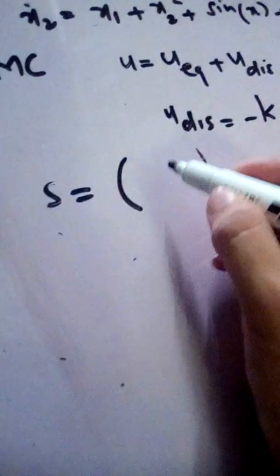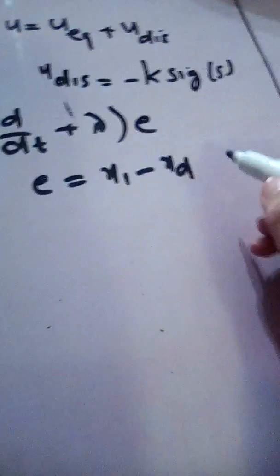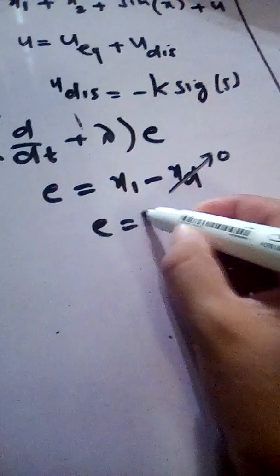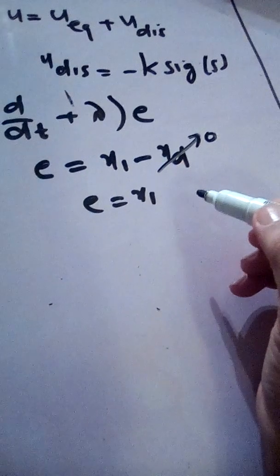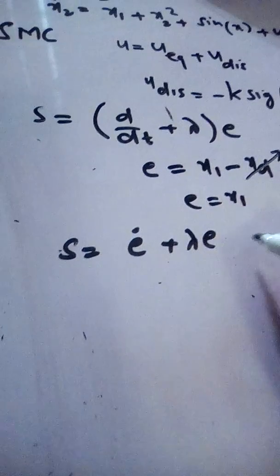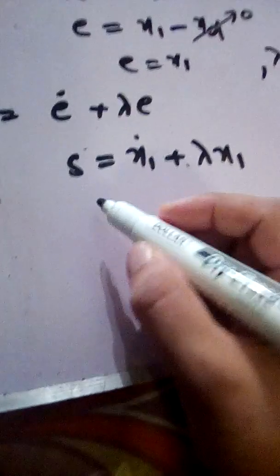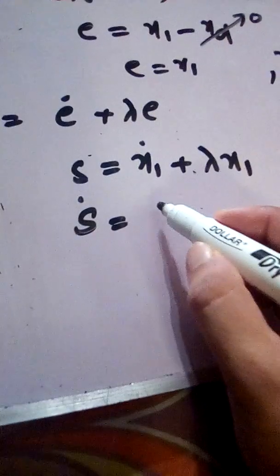We define our sliding manifold as follows. The error e is defined as x1 minus x1_desired. If our desired x_d is zero, then e equals x1, and we are taking x1 to zero. Lambda is a positive constant. The sliding surface is therefore: s = e_dot plus lambda times e, which gives us x1_dot plus lambda times x1.